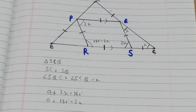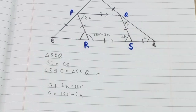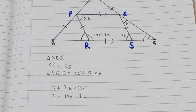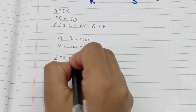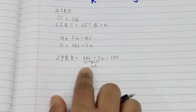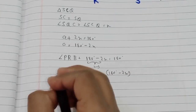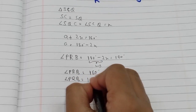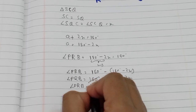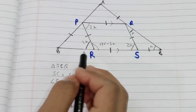Now our goal is to find angle B. Angles PRB and PRS form a linear pair, so their sum is 180 degrees. Therefore, angle PRB plus (180 minus 2x) equals 180 degrees. Solving, angle PRB equals 180 minus 180 plus 2x, so angle PRB equals 2x.